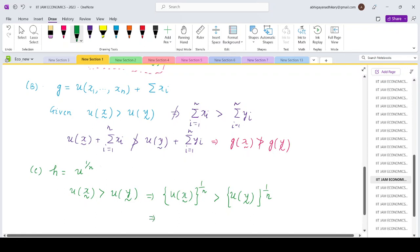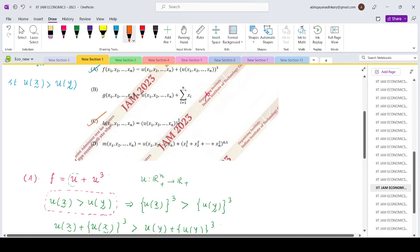So that implies H of X greater than H of Y. So this represents the same preference profile. So option C is also correct.